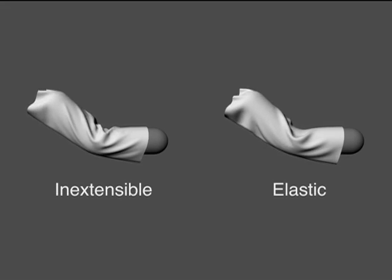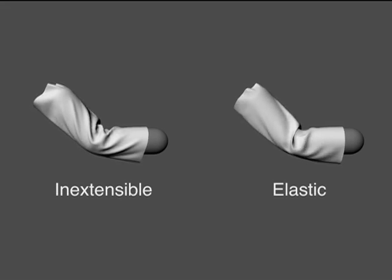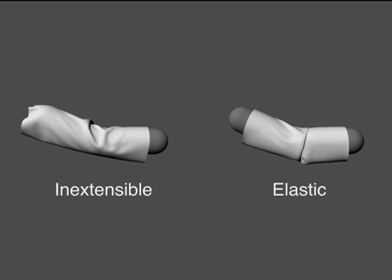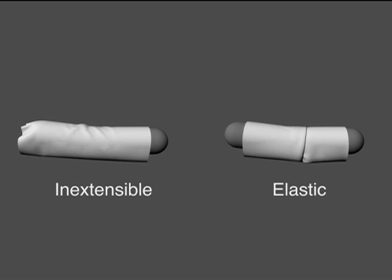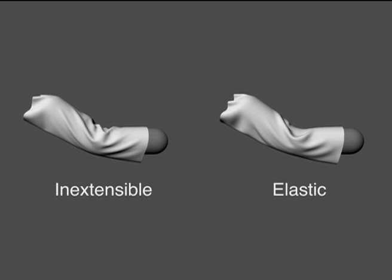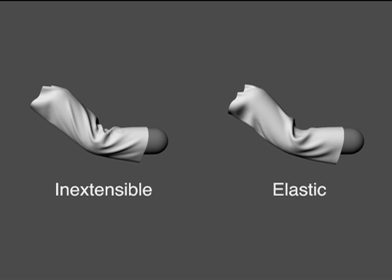When cloth resists compression, it is forced to buckle instead. In this example, an inextensible cloth is compared to the immediate buckling model. Note how the inextensible cloth generates more wrinkles.